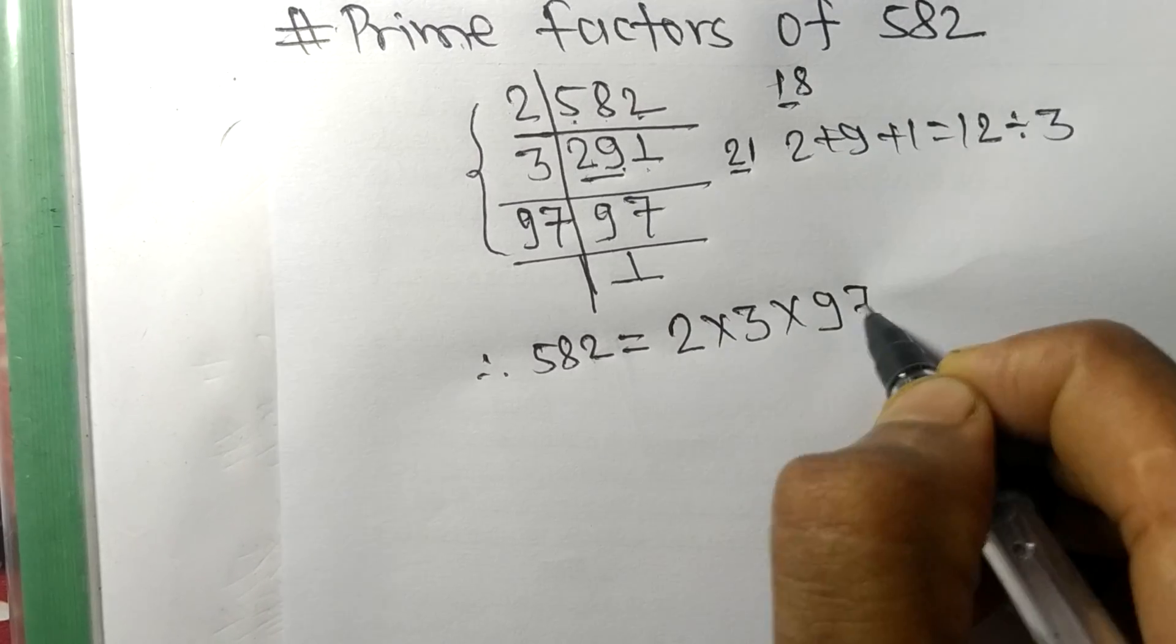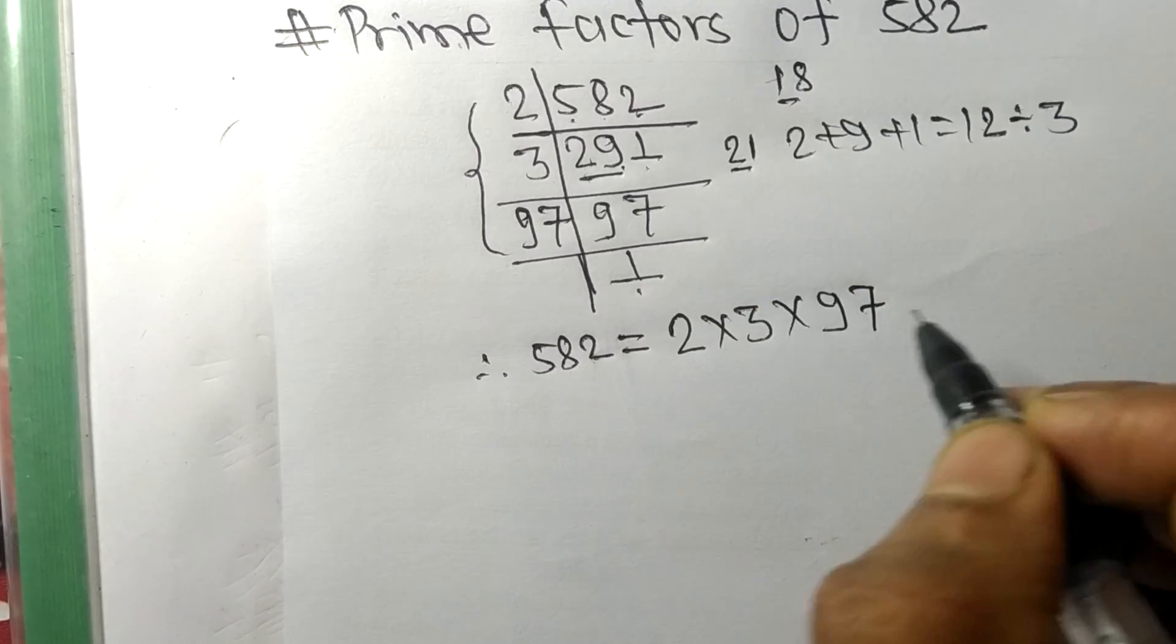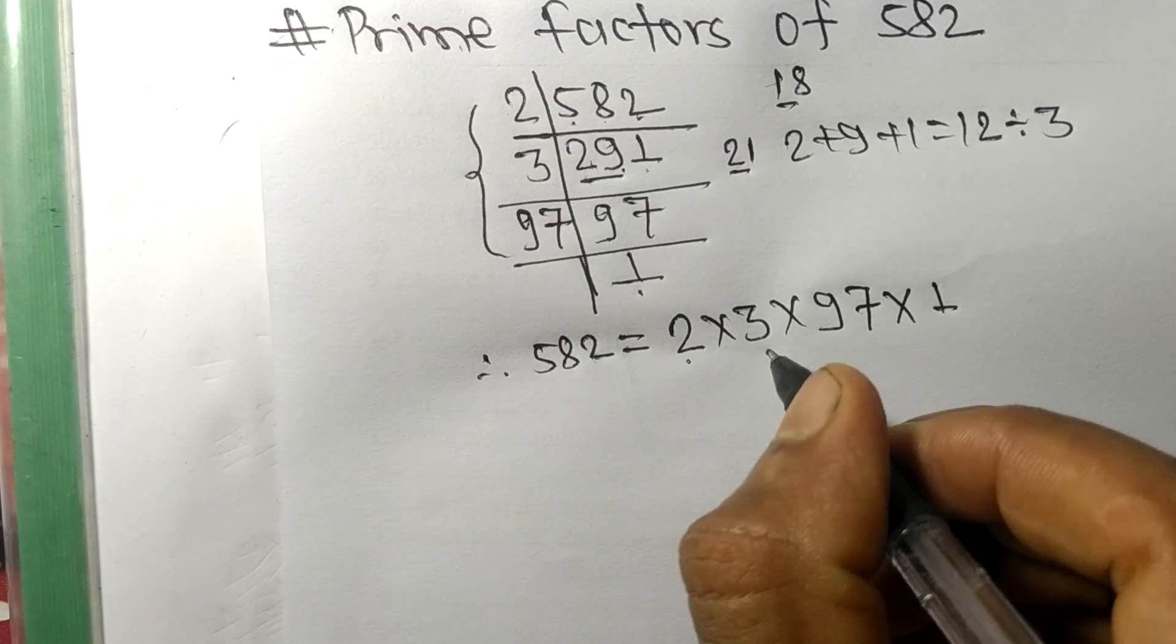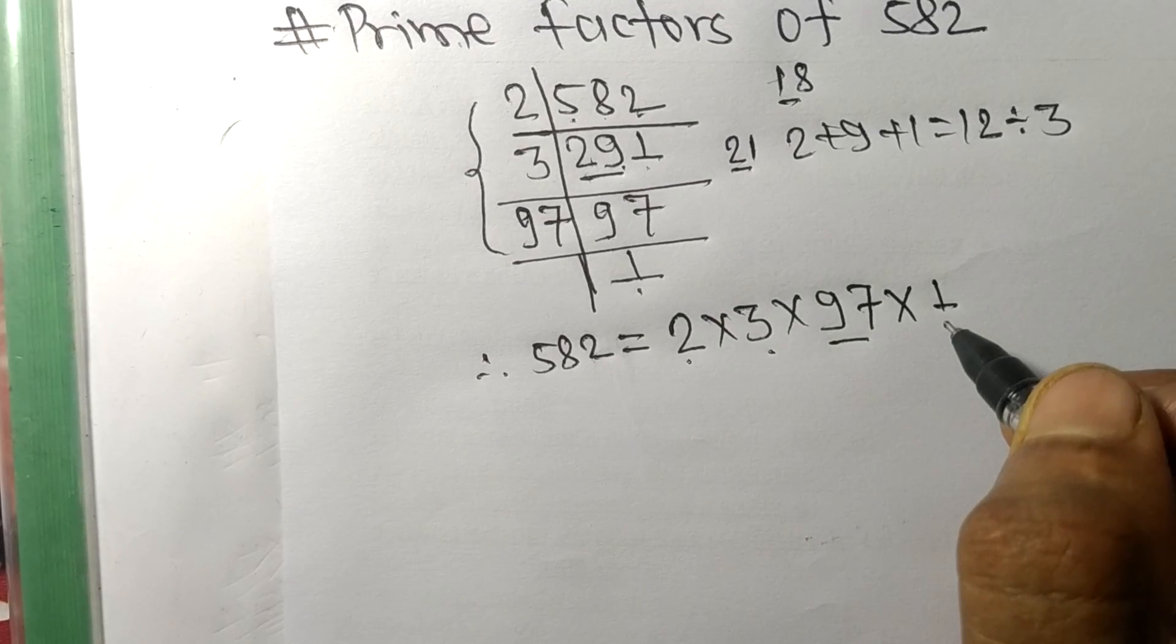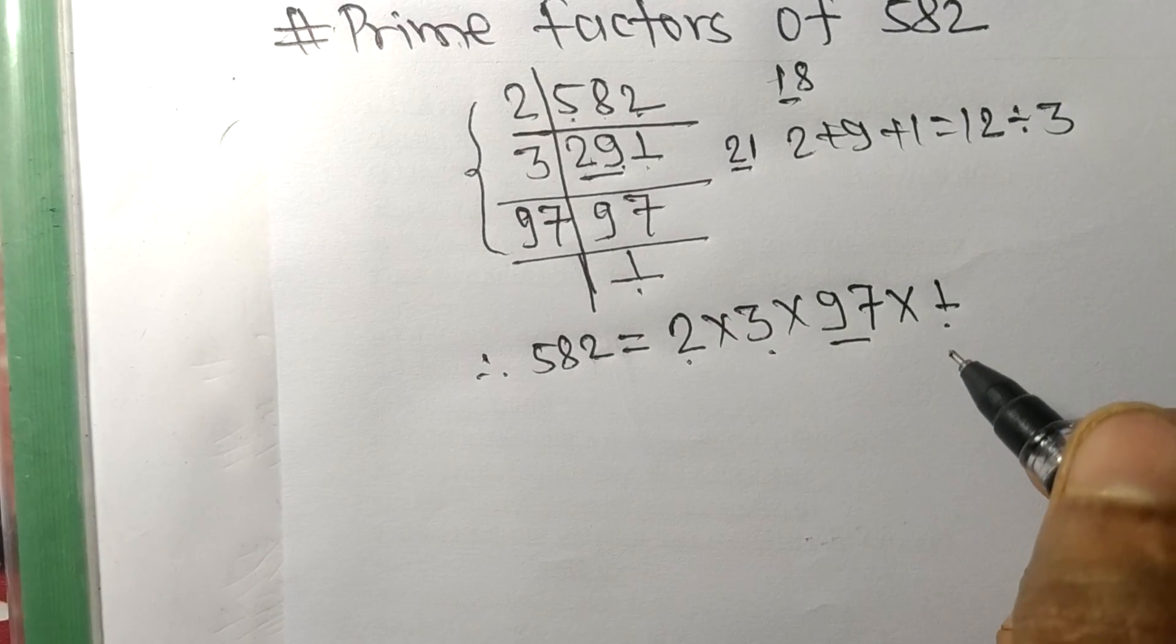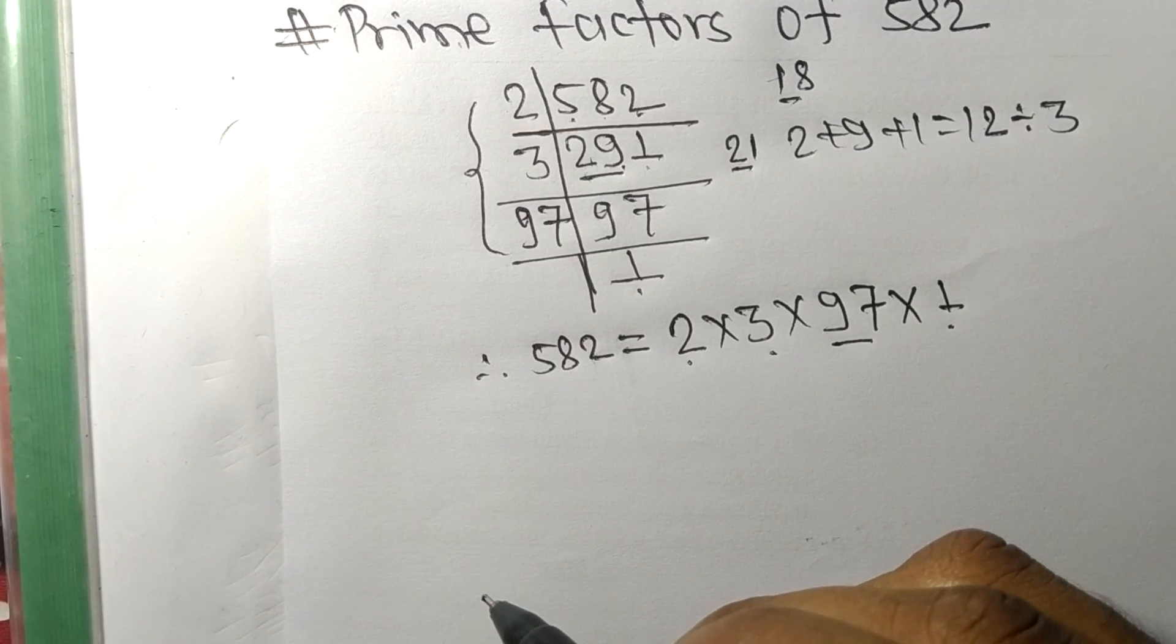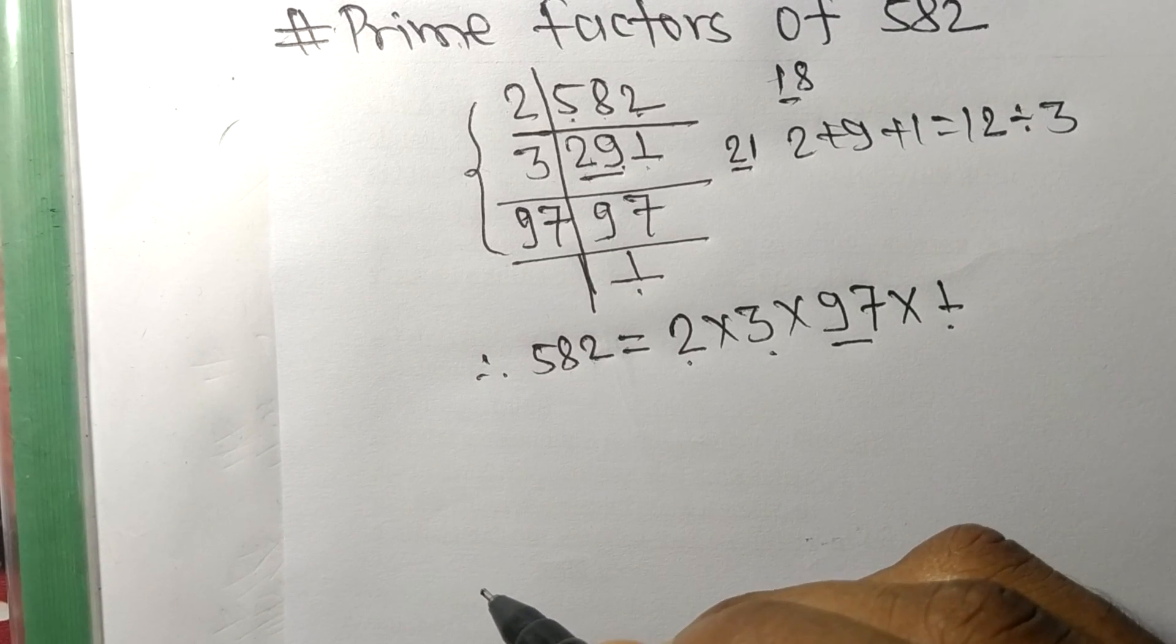And from here it is 1, so 2, 3, 97, and 1 are the prime factors of 582. So this much for today and thanks for watching.